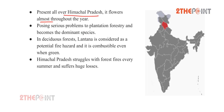At present, Lantana is all over Himachal Pradesh and flowers almost throughout the year. This weed is poisonous and creates a serious threat to plantation forestry, becoming a dominant species that reduces the nutrients available to all other plant species in the deciduous forest. Lantana is also considered a potential fire hazard since it is combustible even when green.